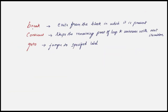So we have seen break, continue, and goto in this video. Break is used to exit from the block in which it is present. Continue skips the remaining part of the loop and continues with the next iteration. Goto jumps to the specified label. These three are usually referred to as loop control statements, but break is also used with switch case and goto can be used anywhere in the program. Thank you for listening.